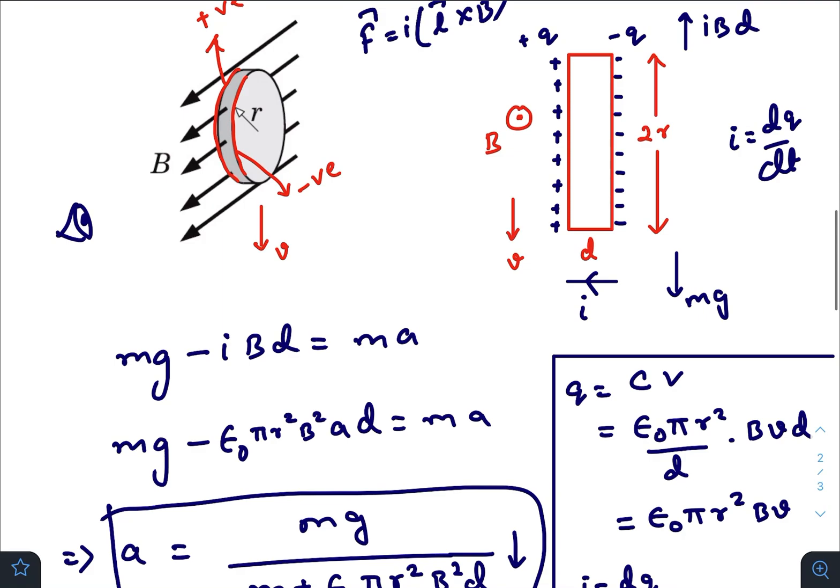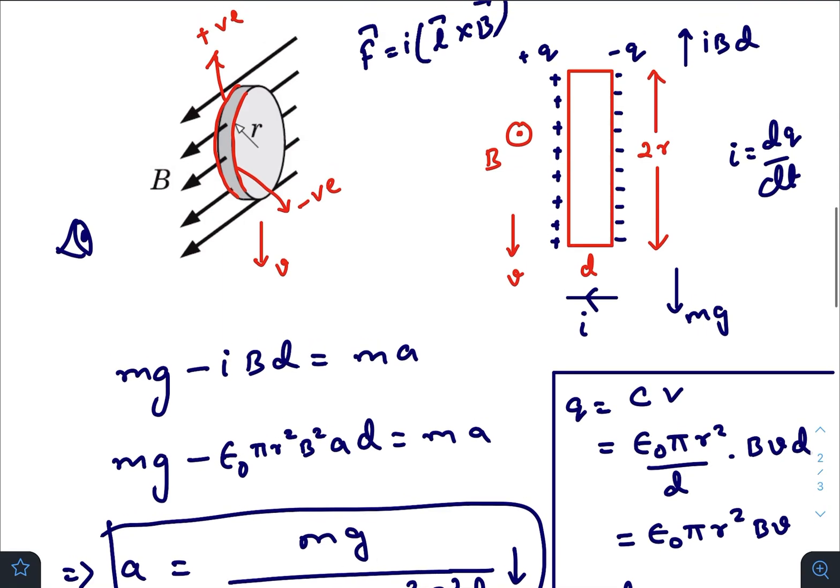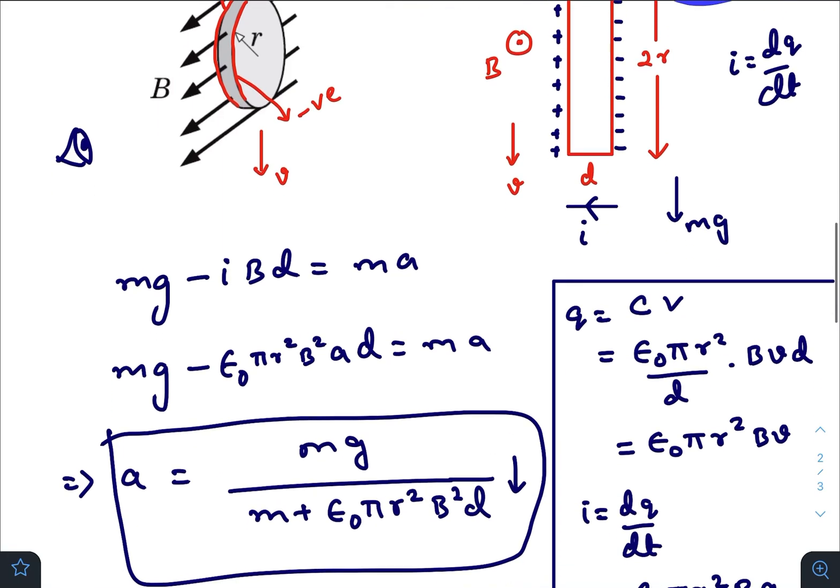So the net forces at any instant acting on this disk would be M G downwards, I B D upwards. So net force in the downward direction is M G minus I B D equals mass times acceleration.